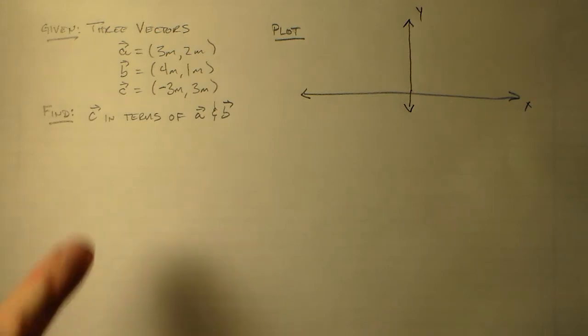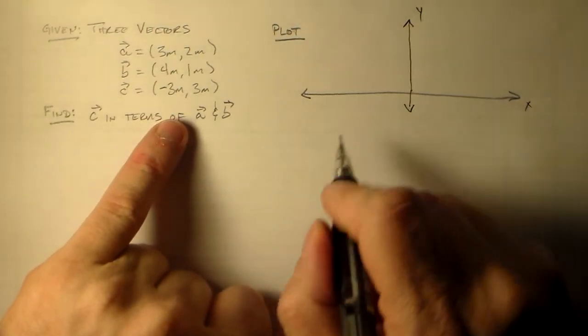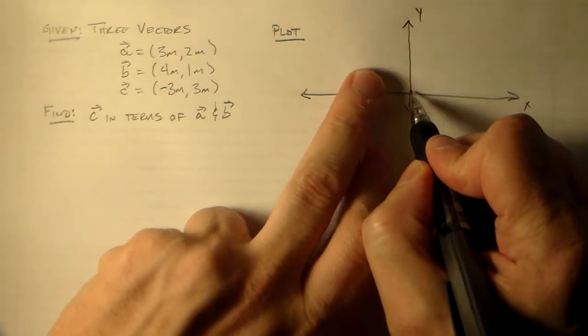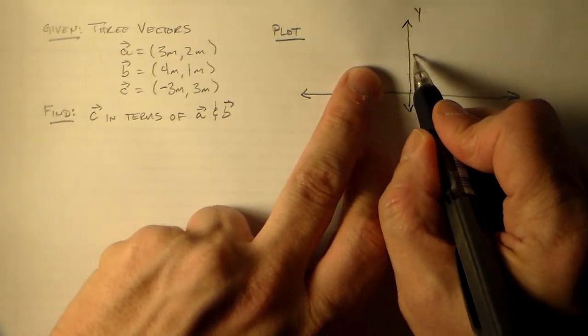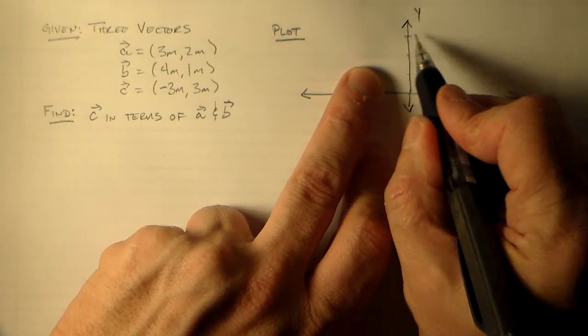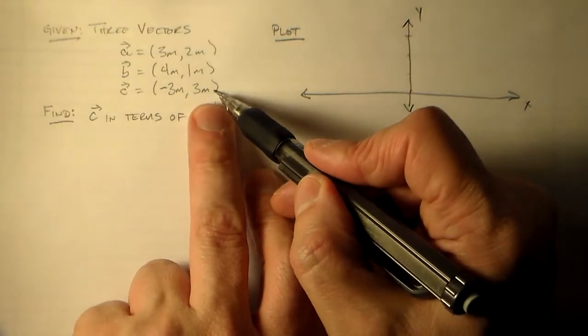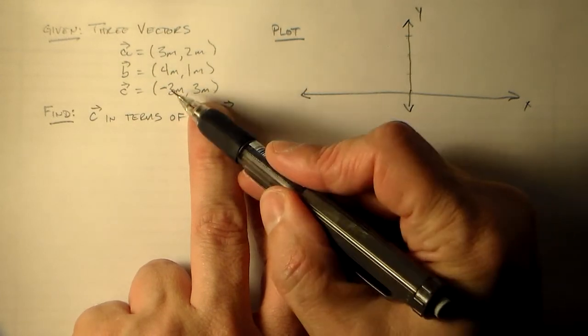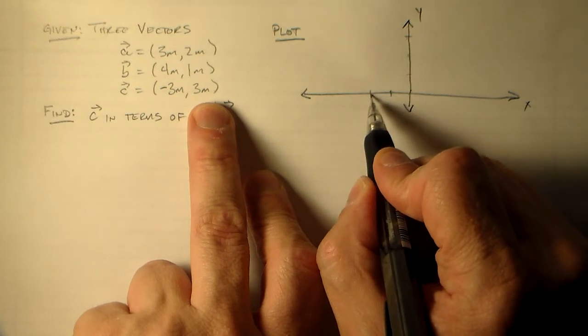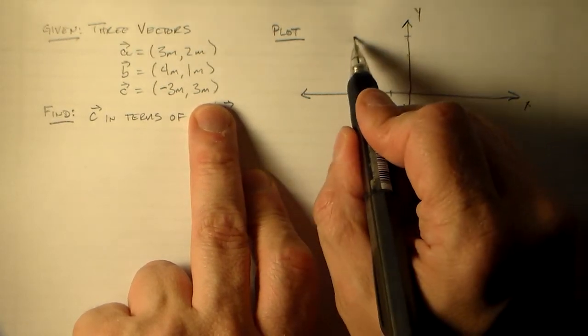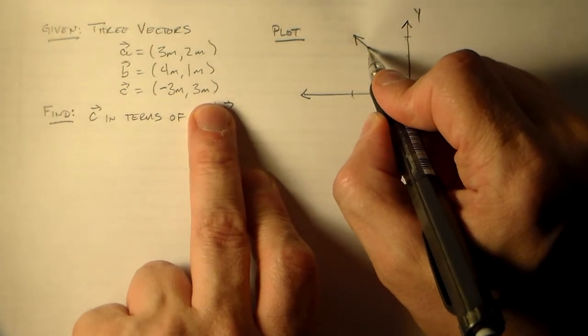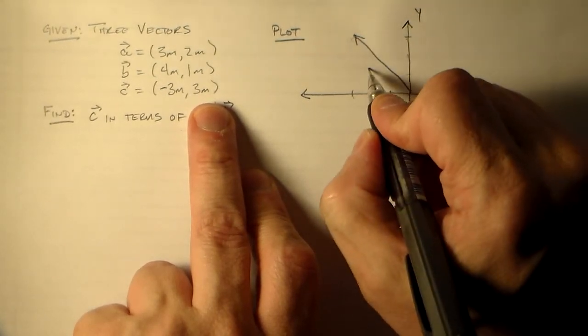Okay, so let's see what these things look like if we actually plot them. Okay, so we've got one, two, three, one, two, three. So our highest one is here at minus three meters to the left and three meters up, which is here. So this is the one we want to find in terms of the other ones, right, called C.